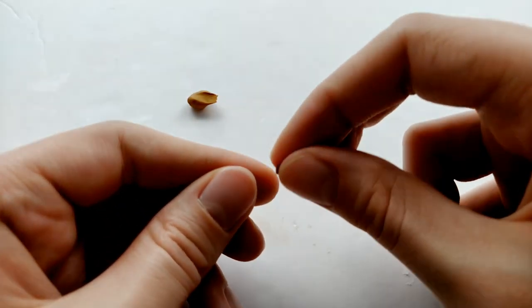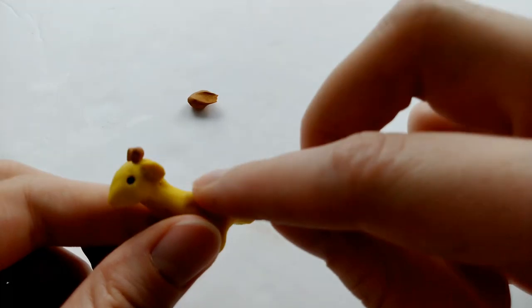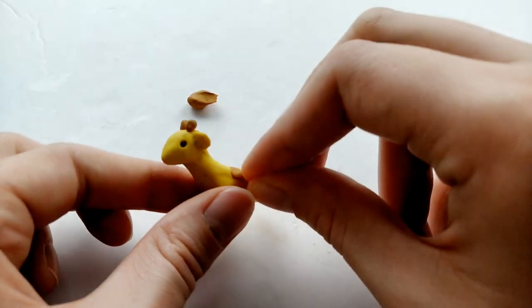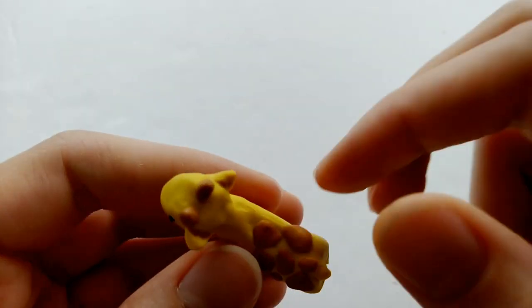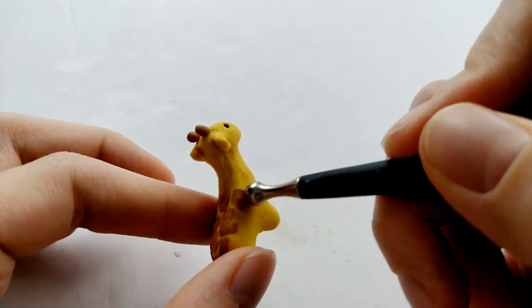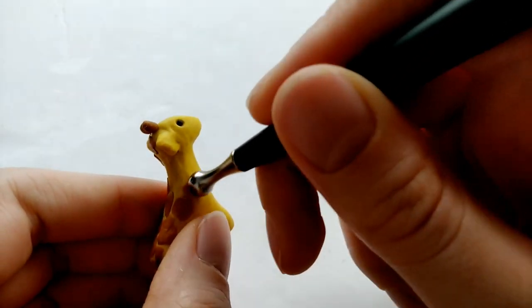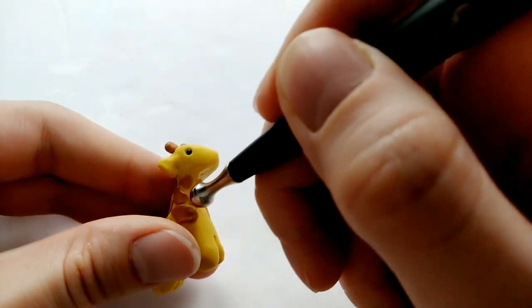Next with some brown clay, we're just going to rip it up into little pieces, roll it out, and kind of make it into a flat square shape. And I'm just placing it on the giraffe randomly. You could actually look at a picture and follow the pattern it has, but I didn't. And this took a lot longer than I thought it would, so allot yourself more time than you think.